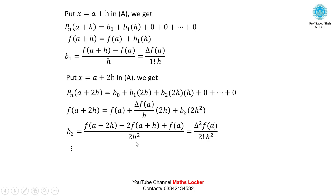This process continues for all coefficients, giving the general result: bn = delta^n f(a) / (n! · h^n).